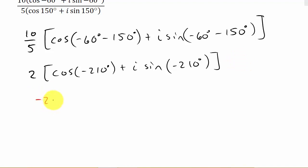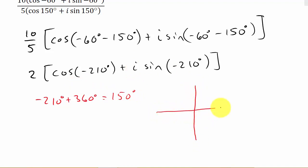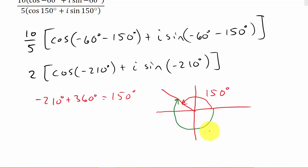So we've got negative 210 degrees plus 360 degrees. Negative 210 plus 360 gives me 150 degrees. So we know that 150 degrees is here in the second quadrant. And there's your negative 210 degrees — they have the same terminal side. So the sine and cosine of 150 is the same as the sine and cosine of negative 210.